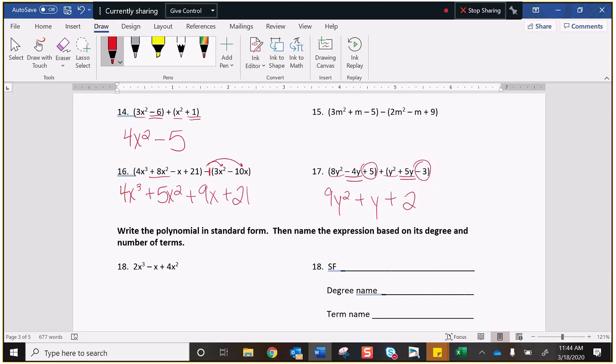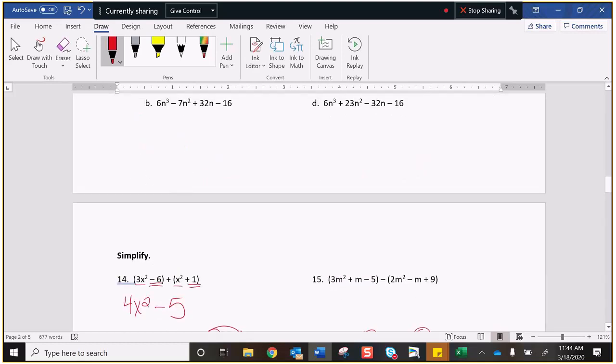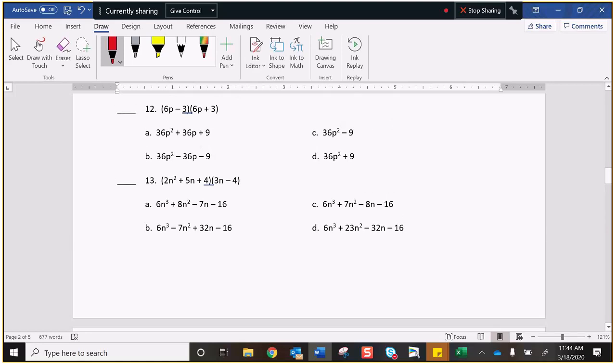So there are no cubed terms. So 4x cubed. We have an 8x squared minus 3x squared. That's going to be 5x squared. We have a negative x minus negative 10x. So that's the same as negative 1 plus 10. So that's going to be plus 9x, and there's nothing to combine with the 21. Number 17, again, combining like terms. This is more like 14. So you're just doing whatever sign is in front of the number since it's addition. So you get 9y squared minus 4 plus 5 is plus 1 or just plus y. And positive 5 minus 3 is plus 2. Thirteen.